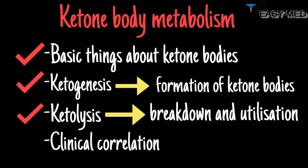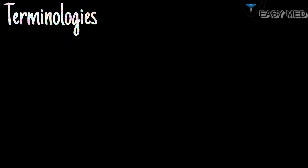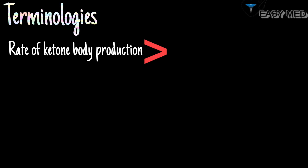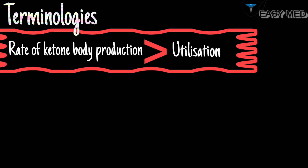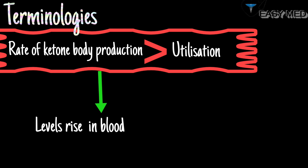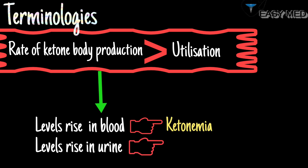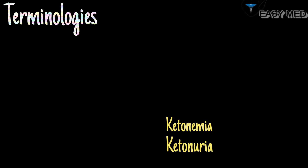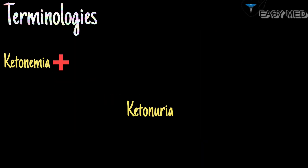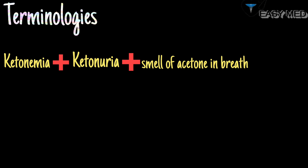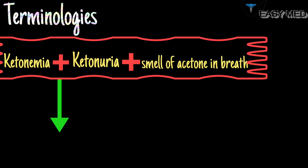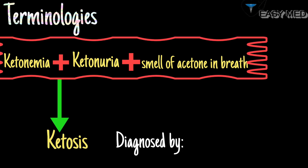When the rate of ketone body production is greater than their use, their levels begin to rise in the blood, which is termed ketonemia, and in the urine, termed ketonuria. When there is ketonemia, ketonuria, and a smell of acetone in the breath, such a condition is termed ketosis, which is diagnosed by a special test called Rothera's test.